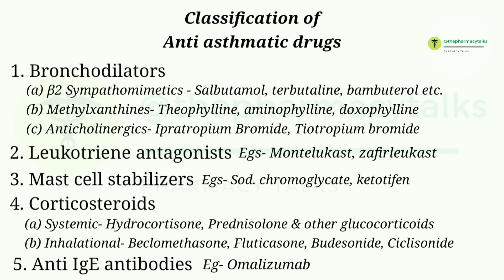Second class of anti-asthmatic drugs are leukotriene antagonists. Examples of leukotriene antagonists are montelukast and zafirlukast. Next are mast cell stabilizers. Examples are sodium cromoglycate and ketotifen.